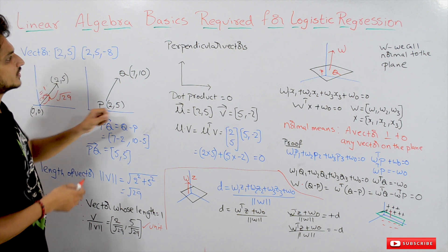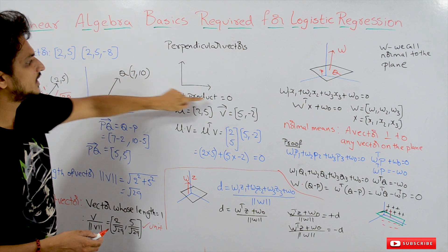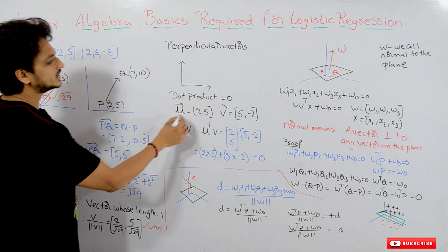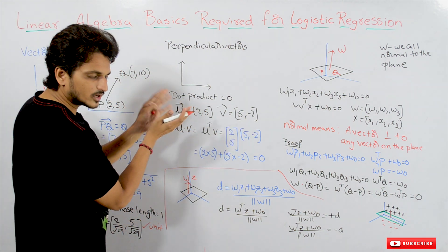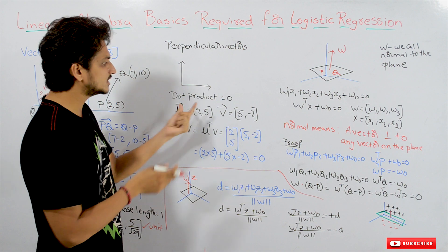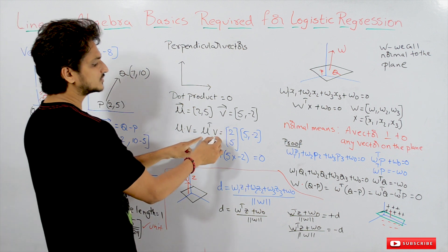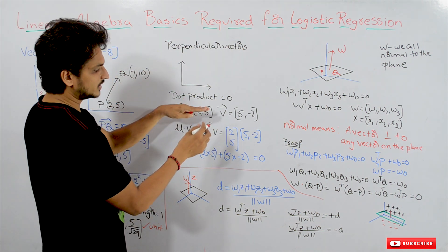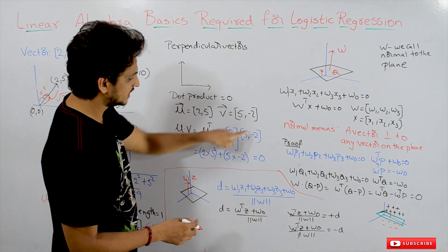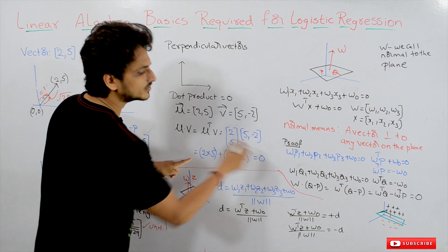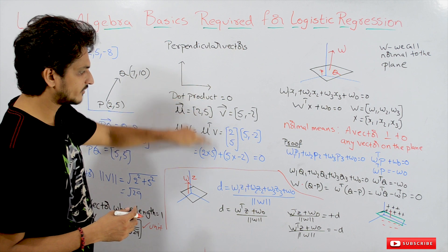The next important concept: two vectors are said to be perpendicular if their dot product equals 0. For example, u = (2,5) and v = (5,-2). The dot product u·v = u^T v. Since (2,5) transposed is a row vector, matrix multiplication gives: 2×5 + 5×(-2) = 10 - 10 = 0. So these two vectors are perpendicular. This is how we calculate the dot product of two vectors.